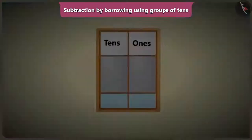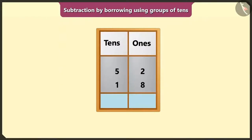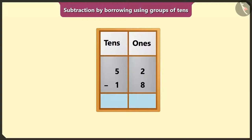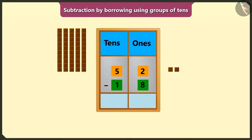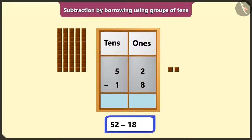Chi-Chi, let's do subtraction after writing 52 and 18 in the box of ones and tens. You had 52 chocolates, which means 5 tens and 2 ones chocolates. We ate 18, means 1 ten and 8 ones chocolates. So here we have to perform 52 minus 18.